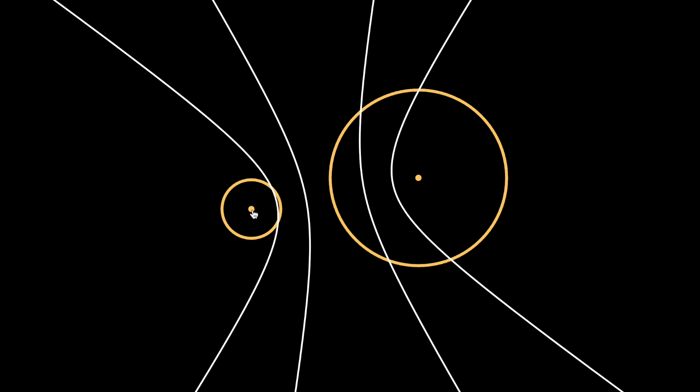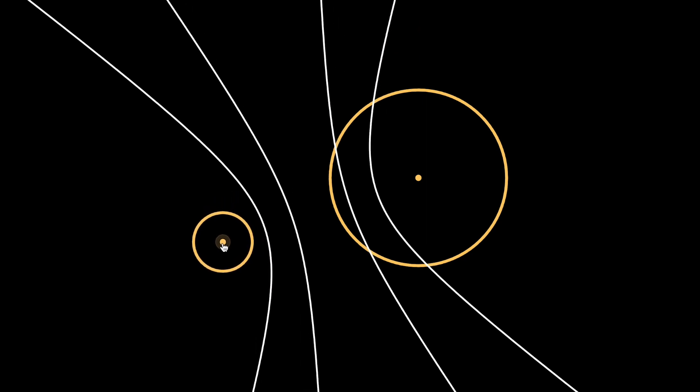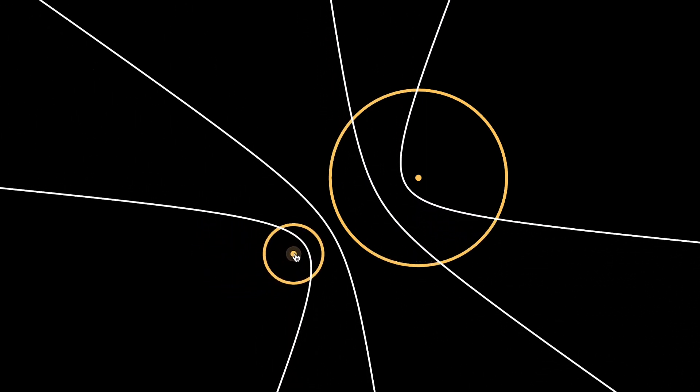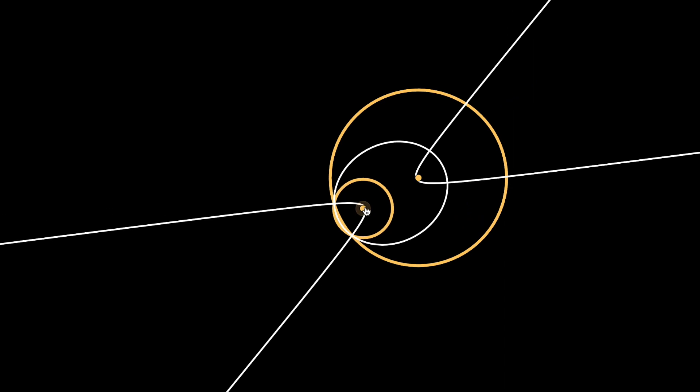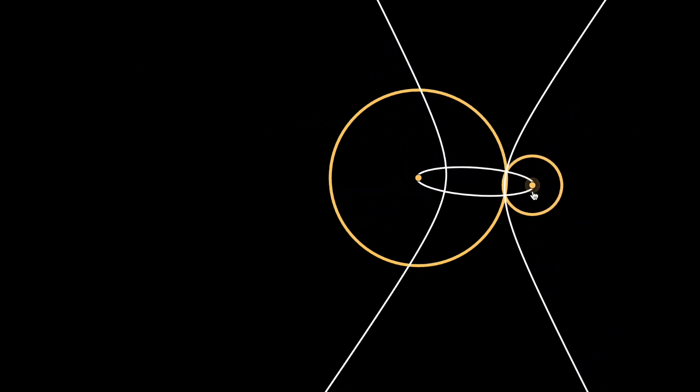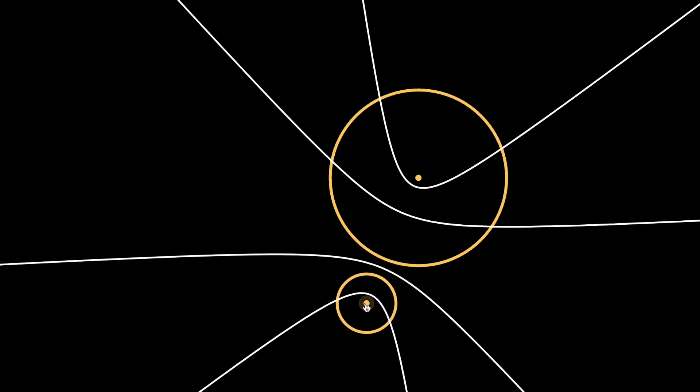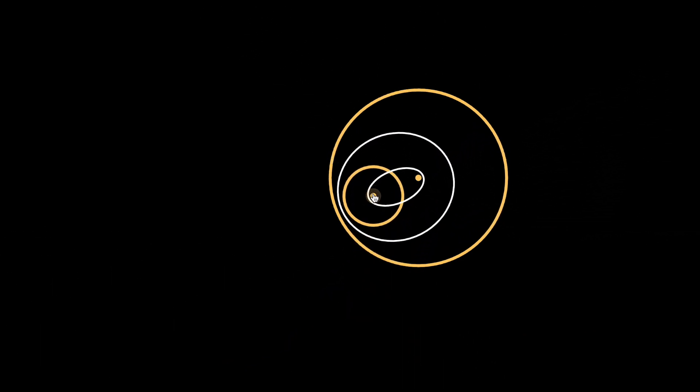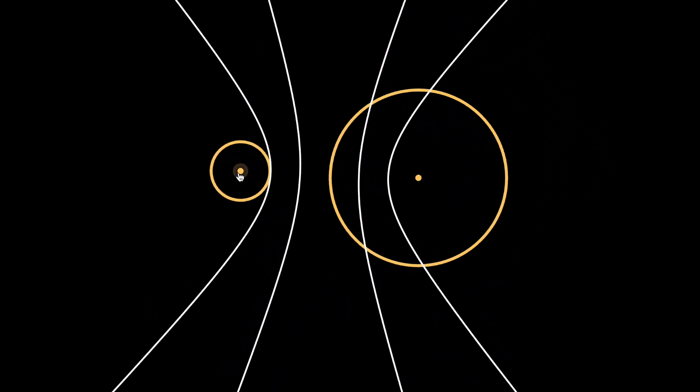When the two circles do not overlap, we get two hyperbolas. When one circle is inside the other, we get two ellipses. And then a combination of ellipse and hyperbola when the two circles intersect. So now the question is why? Why conic sections? Why two of them?